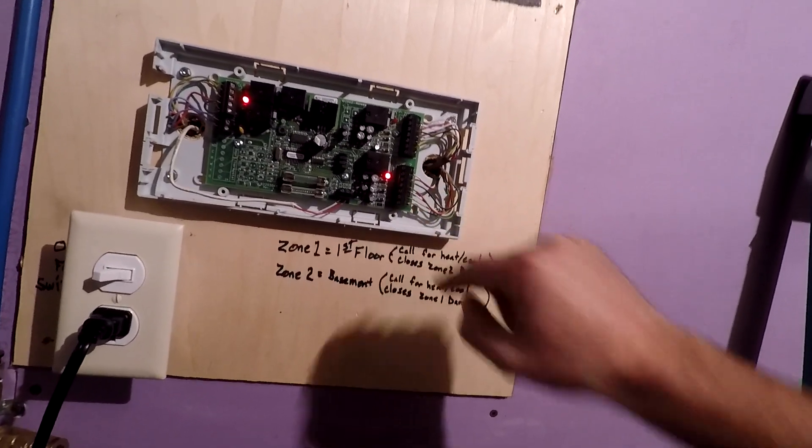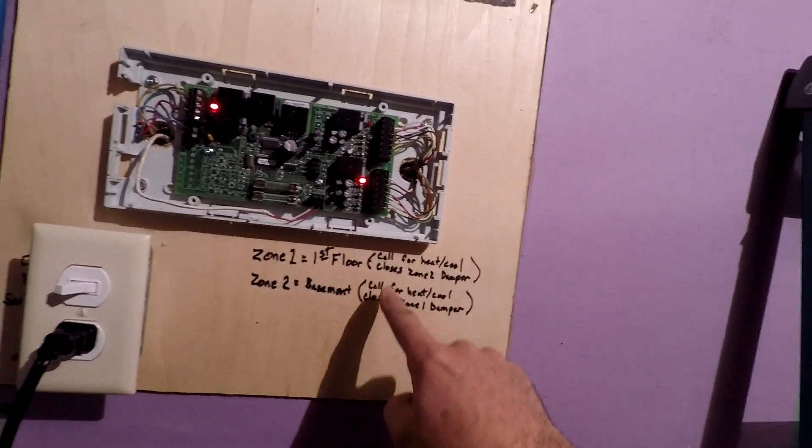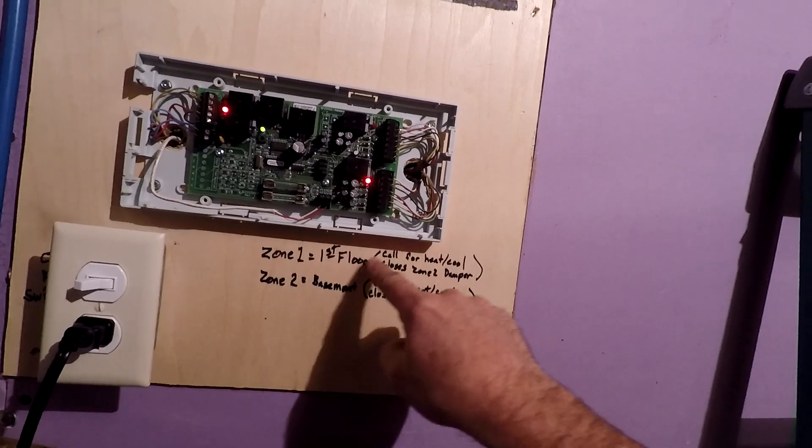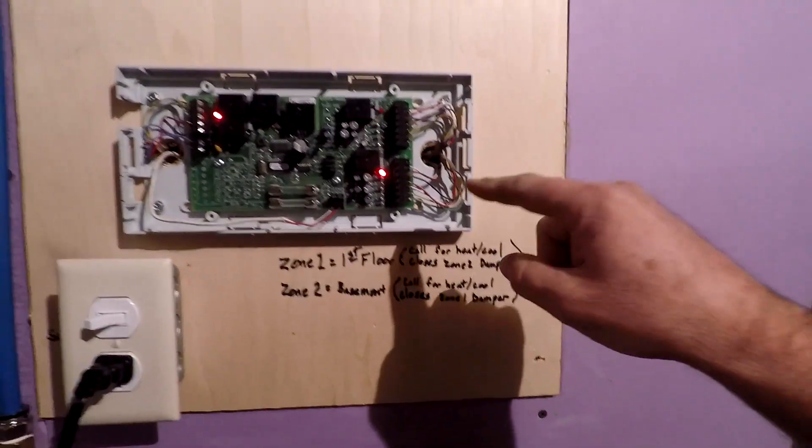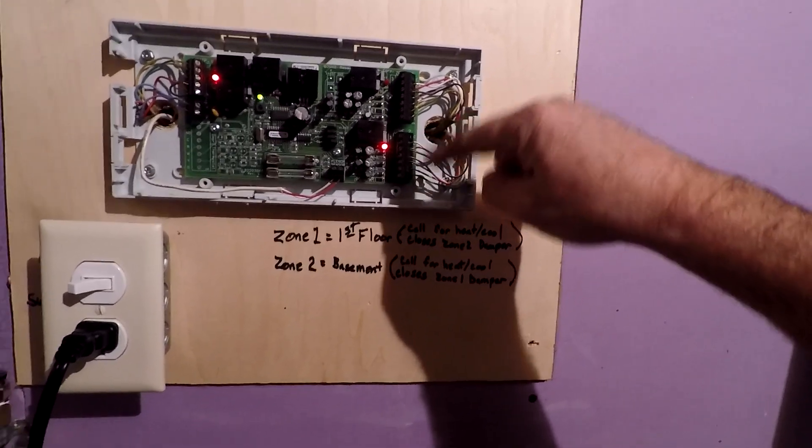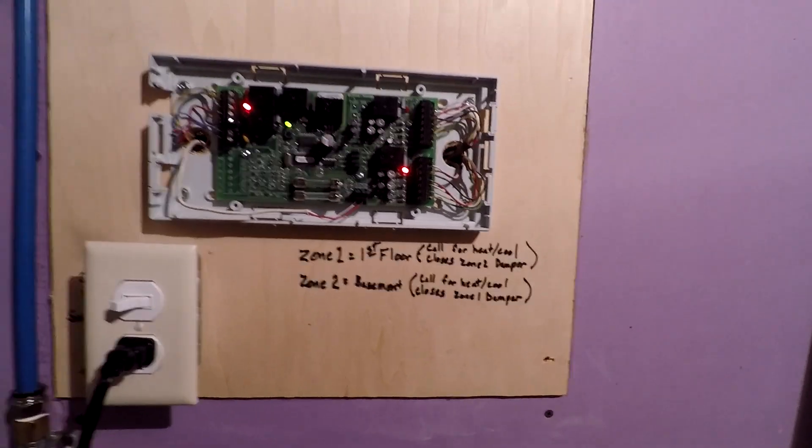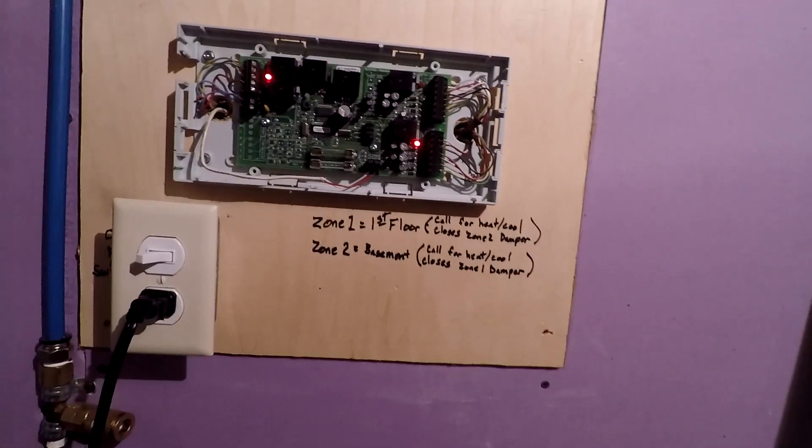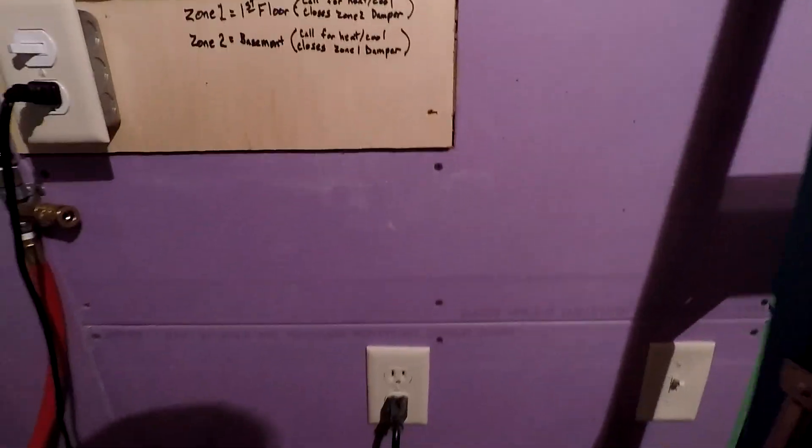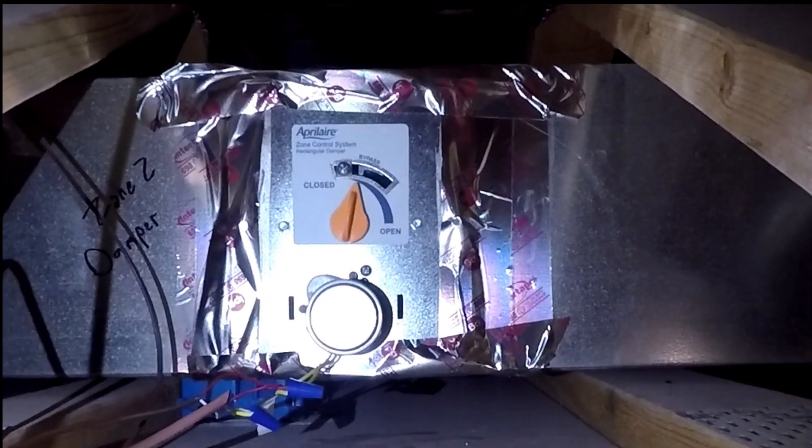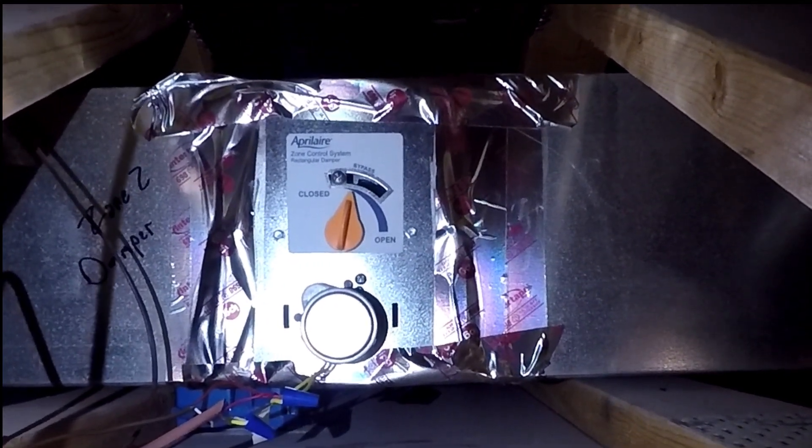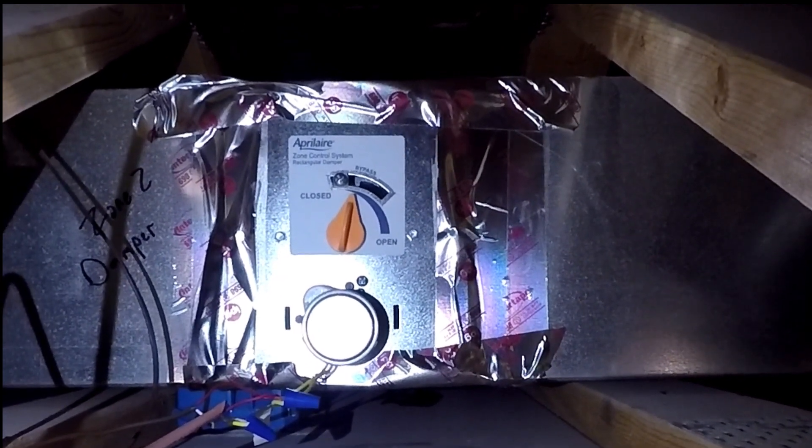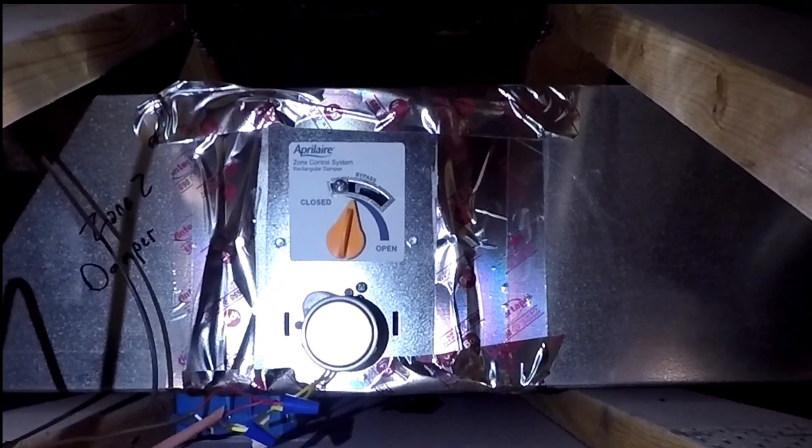This bank of wires here is my zone two bank. Zone one is calling for heat and it's closing zone two damper. There's 24 volts of power coming from this block and going to the zone two damper, and that's supposed to close the dampers. The dampers are normally open if there's no power at all. That's working correctly in this particular zone. And that damper is right there.